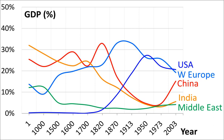The World Economy, Historical Statistics is a landmark book by Angus Maddison. Published in 2004 by the OECD Development Center, it studies the growth of populations and economies across the centuries — not just the world economy as it is now, but how it was in the past.